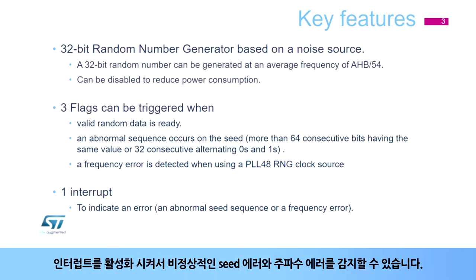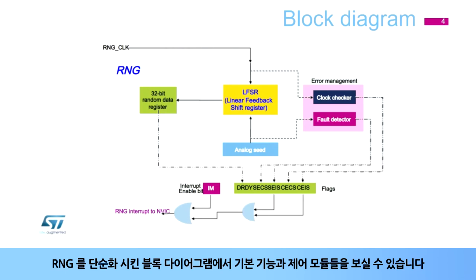An interrupt source can also be enabled to indicate an abnormal seed sequence or frequency error. This simplified block diagram of the RNG shows its basic functional and control modules.